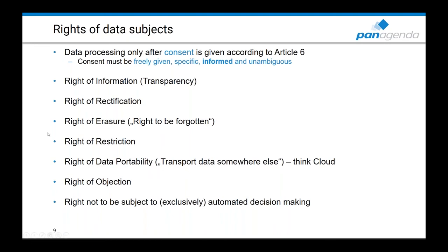The right of rectification allows you to write to a company saying you want your data corrected. The right of erasure — also known as the right to be forgotten — means you can write to Twitter or Facebook and ask to be forgotten. This is different from just deleting your profile: it means that Facebook and Twitter then have to fully erase any knowledge of you as an identifiable person from all their storage.